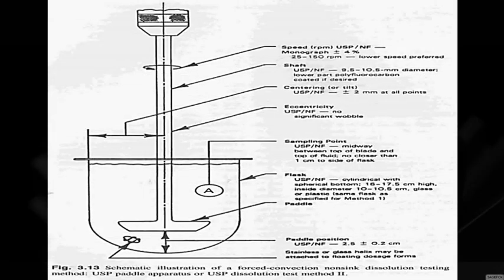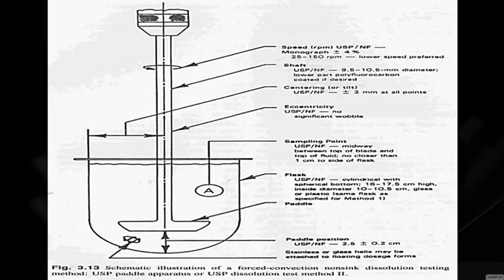USP paddle apparatus (Apparatus 2): speed according to USP NF is 25 to 150 rpm, lower speed preferred. Shaft diameter is 9.5 to 10.5 mm; lower part may be polytetrafluorocarbon-coated if desired. Centering: axis of shaft and vessel must be within ±2 mm at all points. Sampling point: midway between top of the blade and top of the fluid, not closer than 1 cm to the side of the flask. Inside flask diameter is 10 to 10.5 cm. Paddle is positioned 2.5 ± 0.2 cm above the bottom. A stainless steel or glass helix may be attached to floating dosage forms.